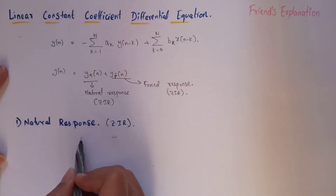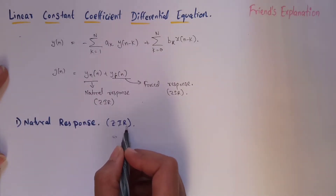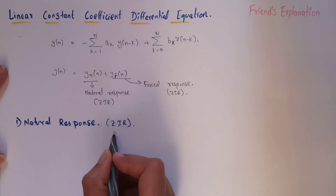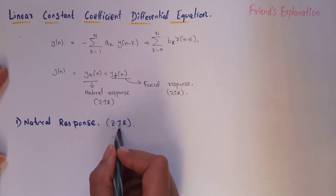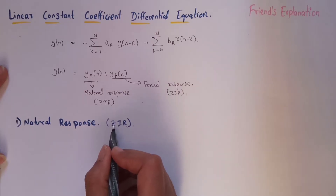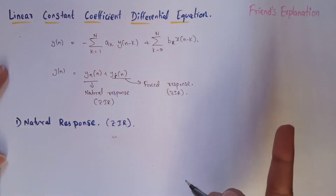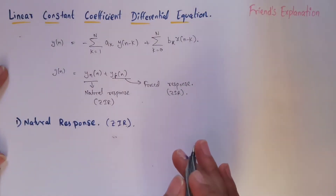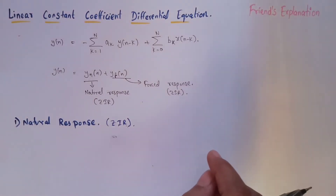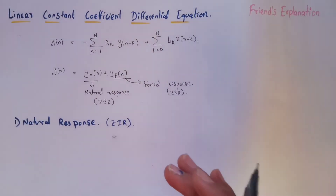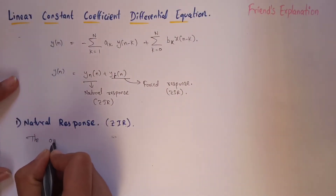Now let's discuss the natural response. As already mentioned, it is a zero-input response — this is the output of the system when all input terms are considered zero. The natural response is obtained by considering the initial conditions. Don't worry about initial conditions because in examinations they will be given in the question paper, and we have to do the calculations accordingly.